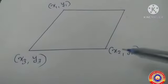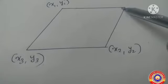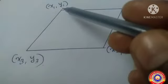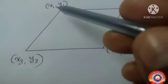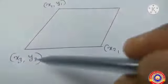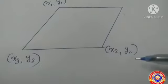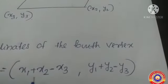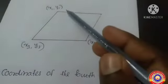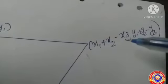Here is a parallelogram with three vertices: (x1, y1), (x2, y2), and (x3, y3), where (x1, y1) and (x2, y2) are the coordinates of the end vertices of the diagonal. To find the fourth vertex, we add the x-coordinates of the end vertices of the diagonal, then subtract the third x-coordinate from it. Similarly, we add the y-coordinates of the end vertices of the diagonal and subtract the third y-coordinate. So the coordinates of the fourth vertex are equal to (x1 + x2 − x3, y1 + y2 − y3). Is it clear for you, children?